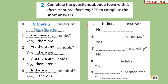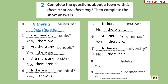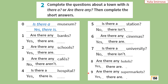5. Is there a station? No, there isn't. — Чи є тут станція? Ні, немає. 6. Are there any cinemas? Yes, there are. — Чи є тут кінотеатри? Так, є. 7. Is there a university? No, there isn't. — Чи є тут університет? Ні, немає. 8. Are there any hotels? Yes, there are. — Чи є тут готелі? Так, є. 9. Are there any supermarkets? Yes, there are. — Чи є тут супермаркети? Так, є.